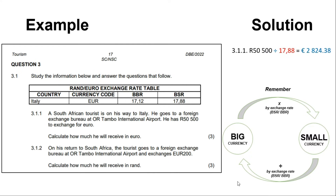For the solution to question 3.1.1: we take 50,500 and divide by 17.88 — which is the BSR rate on the table — giving us 2,824.38 euros. We are moving from the smaller currency (South African rand) to the bigger currency (euro), which is why we divide by the BSR rate.